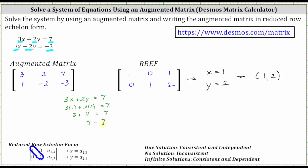Seven equals seven is true, verifying the ordered pair does satisfy the first equation. And now for the second equation, we have X minus two Y equals negative three. And again, we substitute one for X and two for Y, which gives us one minus two times two equals negative three.